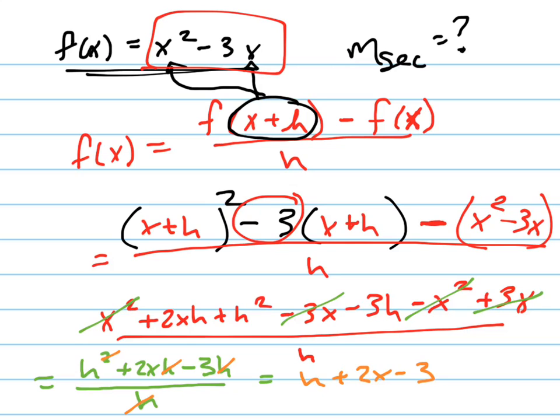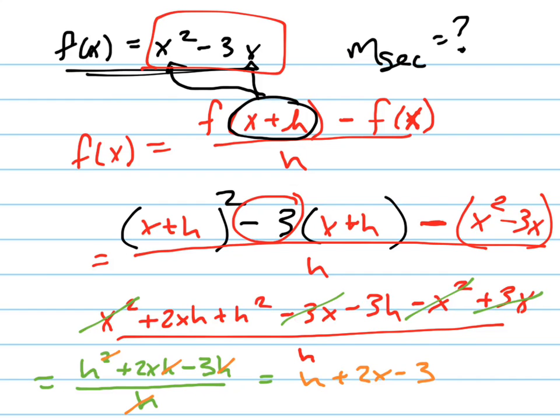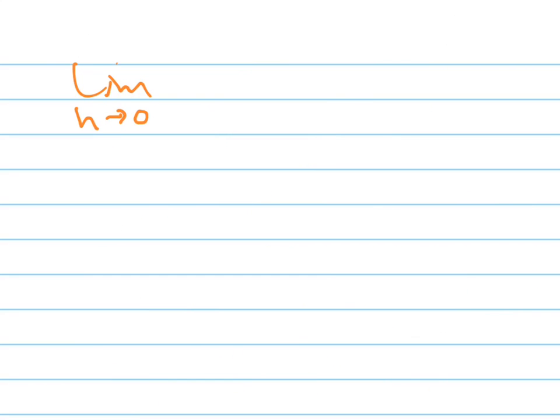All right, the next thing that undoubtedly they're going to ask you is something like this. What's the limit? What's the limit as h approaches 0? That's what they're going to ask you next. And so if we look back at this, as h gets closer and closer to 0, the limit is just going to be 2x minus 3.